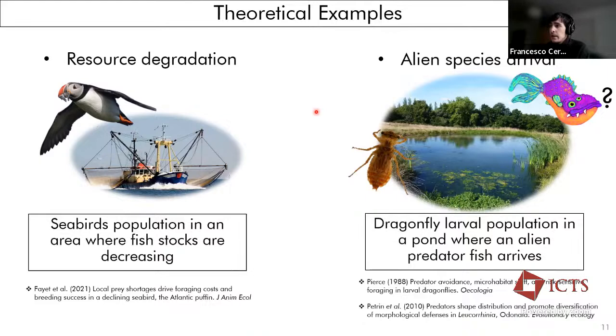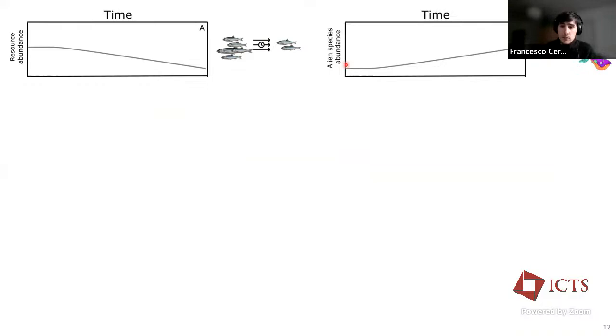So in this first panel of the plots, we have the two different stressors, the parallel stressors, which in the horizontal axis, we have the time. So through time, in one case, the resource abundances, so the fish stocks start continuously decreasing. On the other hand, the alien species, so the predation pressure keeps increasing through time.